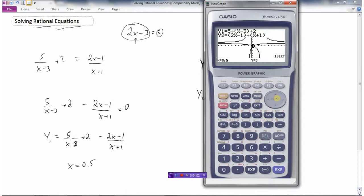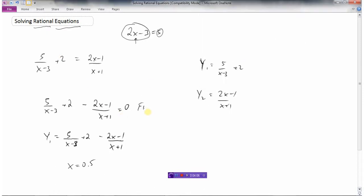By either setting the equation equal to 0 and finding the roots, or doing the left side as one equation and the right side as the second equation, and finding the intersection points. That's all there is to solving rational equations using a graphing calculator.